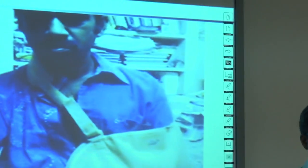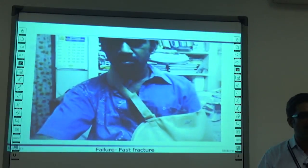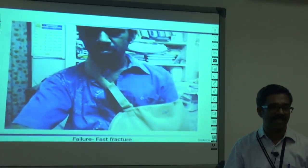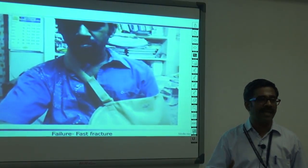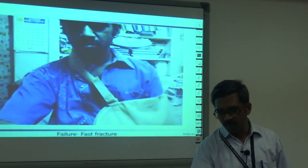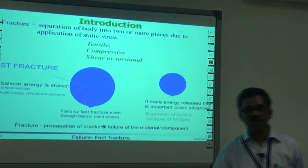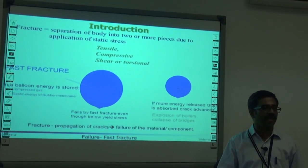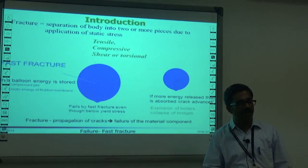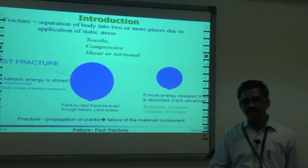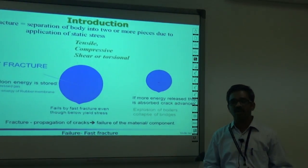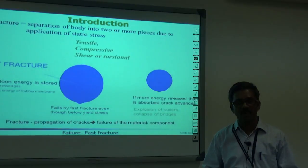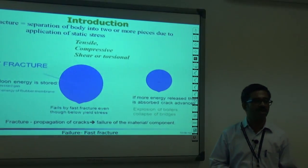What do we mean by the word fracture? In daily life we can connect to it — a fracture in a bone means it is split into two or three parts, broken into pieces. The basic literal meaning is separation of a body into two or more pieces due to the application of stress, which can be tensile, compressive, shear, or torsional. In today's class we will be talking about fast fracture.